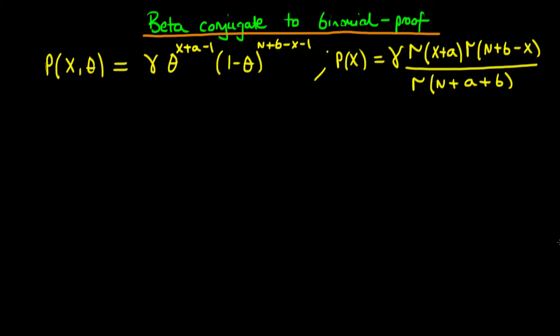In this video, I want to complete our proof that the beta distribution is conjugate to a binomial likelihood. In the last video, we derived the marginal distribution of our data x, and we'd also derived in the video before that the joint distribution of x and theta.